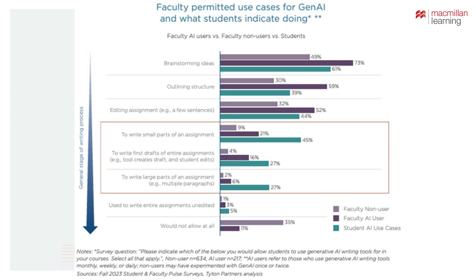In terms of what the data says, Titan and Turnitin collaborated in a study to look at how often faculty and students are using AI. It came out in fall of 2023. They found that 49% of students were using it on some level, versus only 22% of faculty.